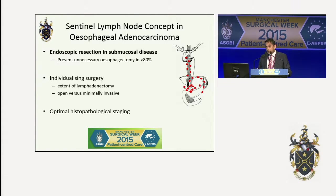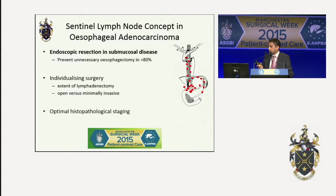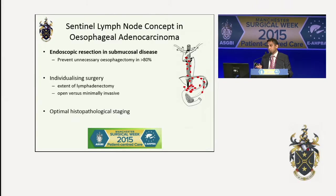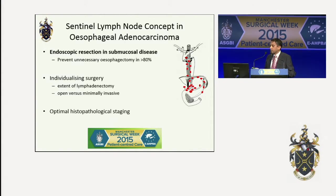A minimally invasive technique of identifying central nodes could potentially revolutionize surgery by allowing patients with submucosal disease to be treated with endoscopic resection. As a staging procedure, this would prevent unnecessary esophagectomy and its inherent risks in over 80% of patients. It could also individualize surgery by determining the extent of required lymphadenectomy, potentially deciding the type of resection, and allowing a pathologist to focus on a more in-depth analysis of the central nodes.